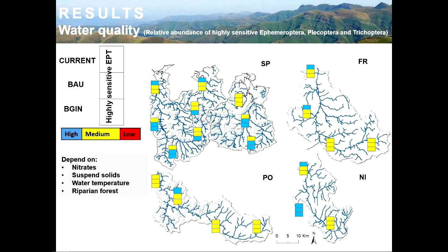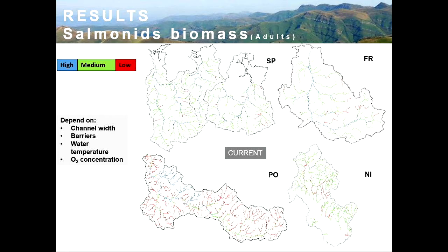Here we can see the relative abundance of highly sensitive Ephemeroptera, Plecoptera and Trichoptera taxa, with three classes of water quality. High water quality is related to a high percentage of abundance of this taxa. This variable depends on nitrates, suspended solids, water temperature and riparian forest. In the mouth and lower parts of the catchment, there is high water quality, while in the middle and headwater parts, there is more medium water quality. In all catchments the headwater quality is relatively stable across the three scenarios, but in the case of Spain, where headwaters in the BG scenario are more forested, water quality improves.